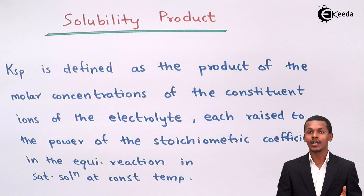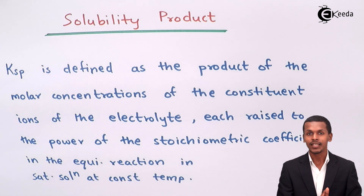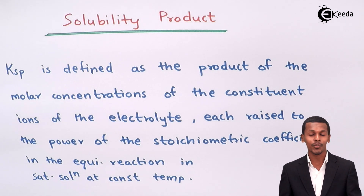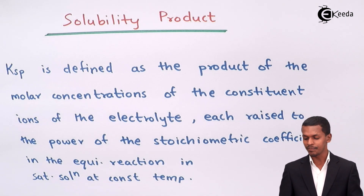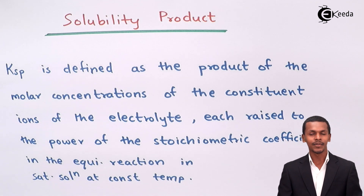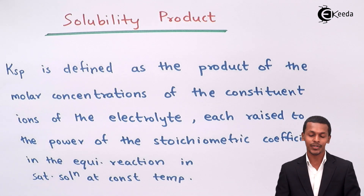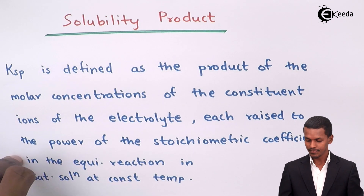Solubility is considered at a constant temperature, and that is what the solubility product means. So let us consider an electrolyte and based on that we can define what the solubility product actually is.